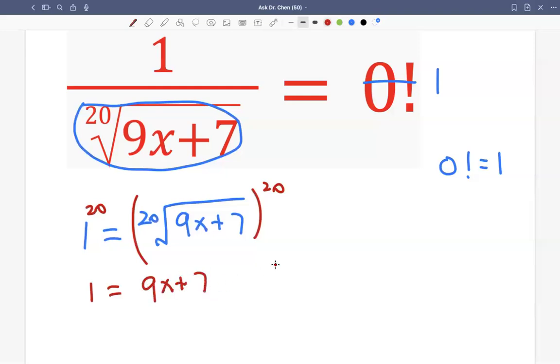We become a linear equation. So subtract 7 on both sides. 9x equals to 1 minus 7, which is negative 6. x equals to negative 6 divided by 9. We simplify this, divided by 3 on both sides, getting negative 2 over 3.